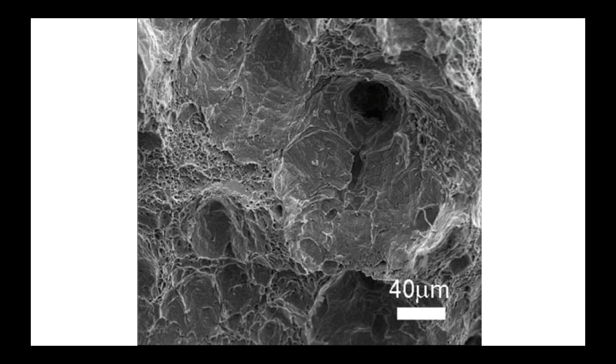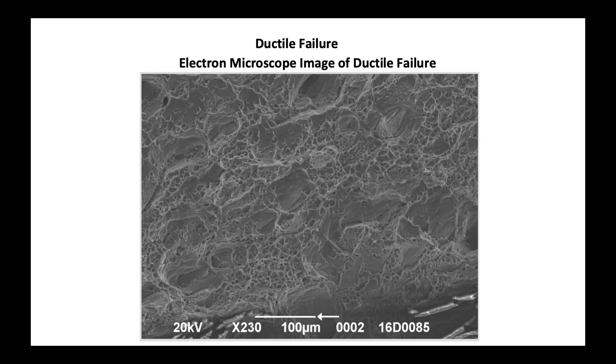Ductile failure can also be seen in aluminum rims. It's interesting to look at ductile failure under an electron microscope and when we do we see something like this. This line at the bottom is 100 microns or 100 times 10 to the minus 6 meters and if you look around you'll see a whole bunch of little depressions in the surface of the metal that you're looking at.